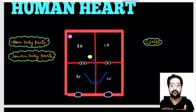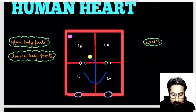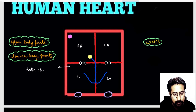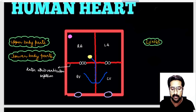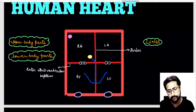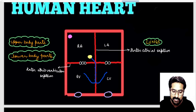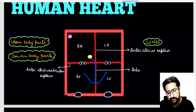There is a septum or wall present between the auricles and ventricles, known as the inter-atrioventricular septum. This atrioventricular septum separates the auricle from the ventricle. The septum present between the right and left auricle is known as the inter-atrial septum. Similarly, the septum present between the right and left ventricle is known as the inter-ventricular septum.